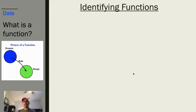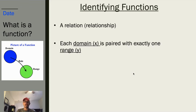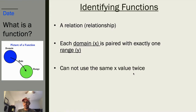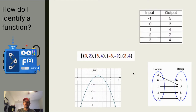So what is a function? A function is a special type of relationship where each domain — each independent variable — is paired with exactly one range, one dependent variable. Simply put, each x is paired with exactly one y. This means that we cannot use the same x value twice to get two different y values; the same x cannot go to two different y values.